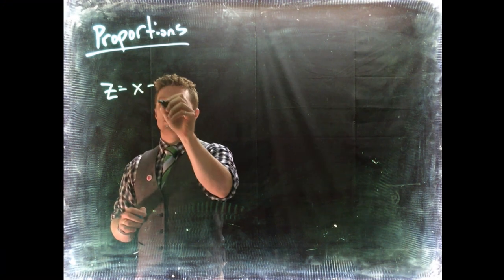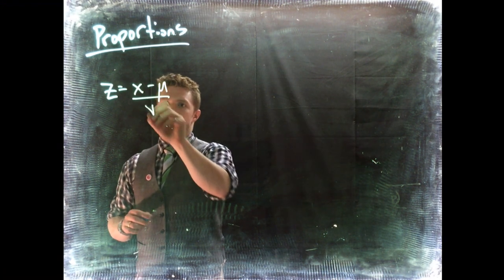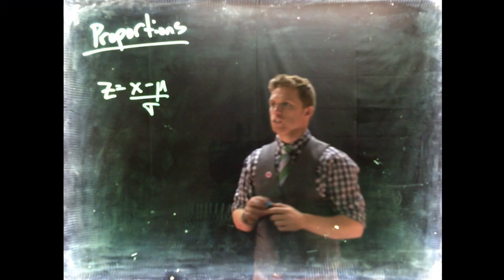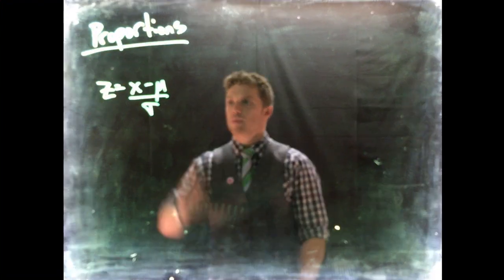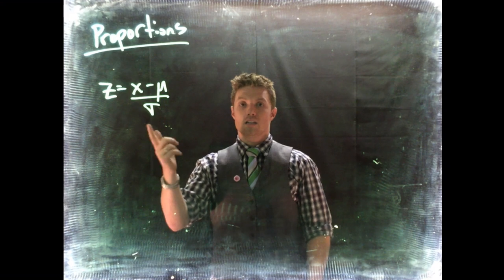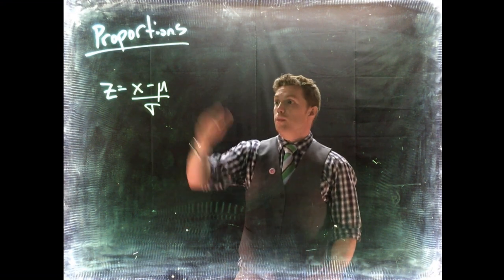We've been building off of this equation: Z equals X minus mu divided by sigma. This was our original equation—how far is a specific measurement from the mean in terms of how many standard deviations.